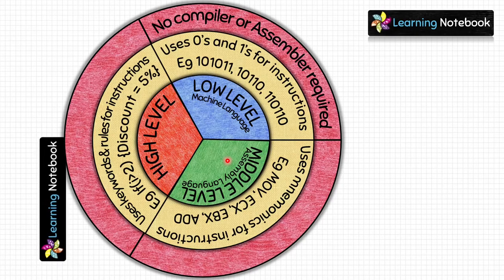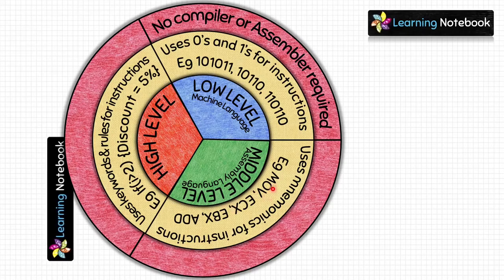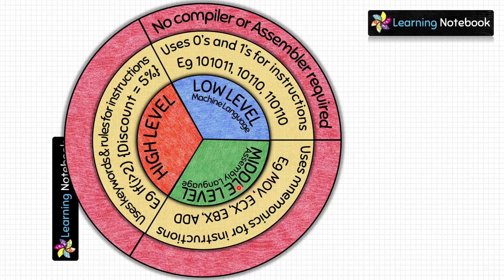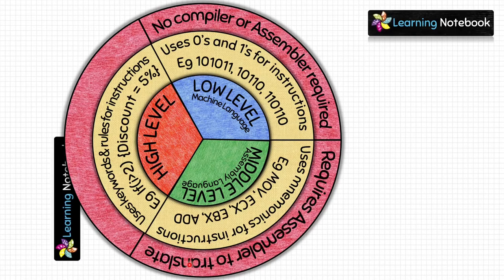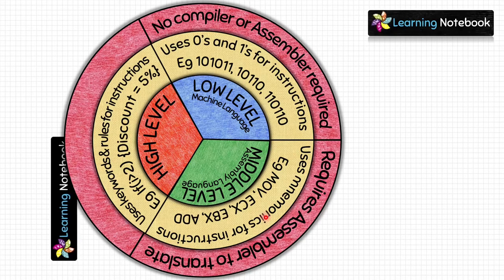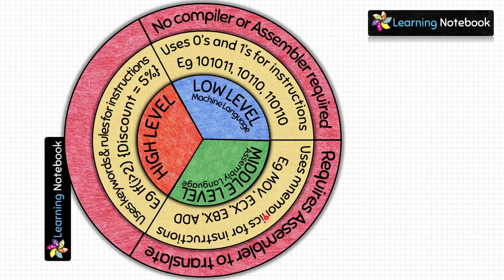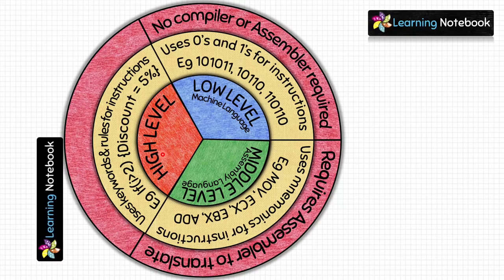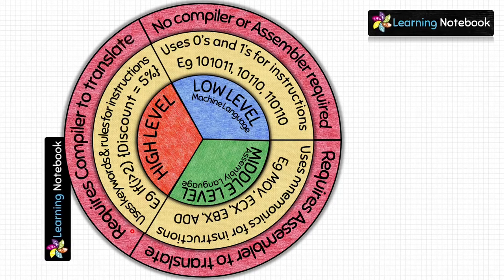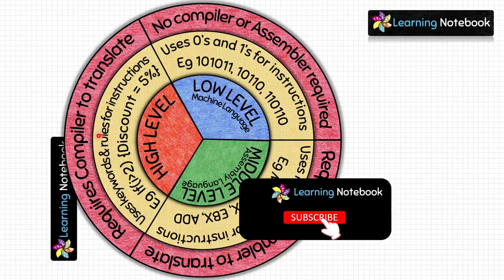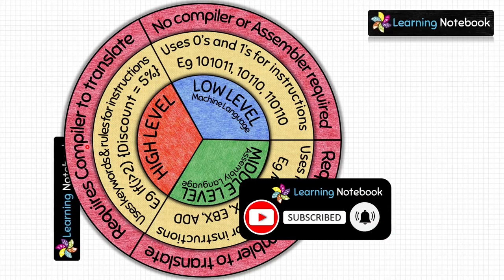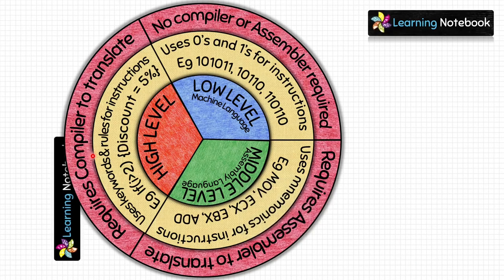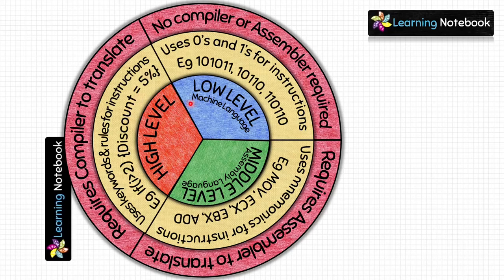For middle level (assembly) language, since mnemonics are used, an assembler is required to translate. The assembler converts assembly language into machine language so instructions can be executed by the computer. For high level language, a compiler is required to translate. The compiler reads instructions written in high level language and translates them into machine language.